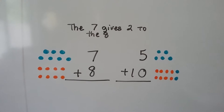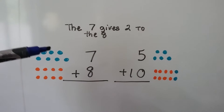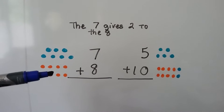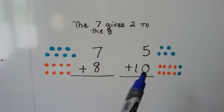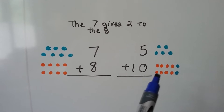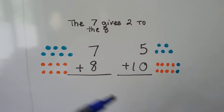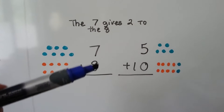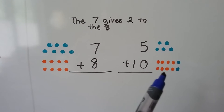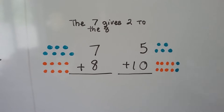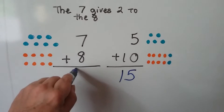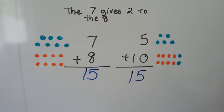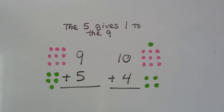Let's try it again. We have 7 plus 8 — we have 7 counters and 8 counters. The 7 is going to give 2 to the 8; that's going to make it a 10. We'll have 10 plus 5. The 7 went down by 2 because we gave 2 of its counters away to the 8 and it made it a 10. 10 plus 5 is 15, so 7 plus 8 must be 15.